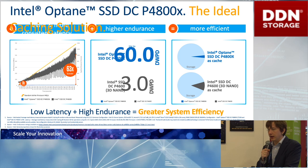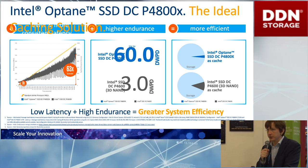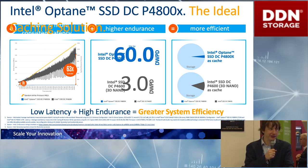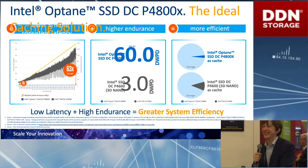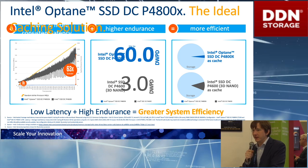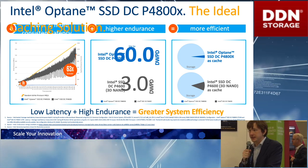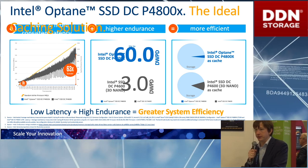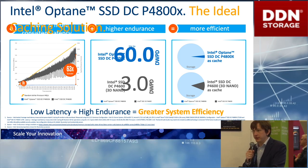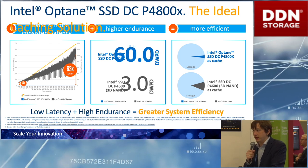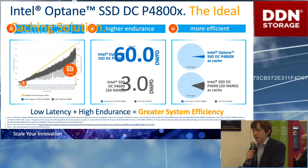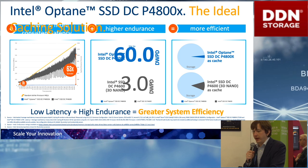What makes Optane SSDs special for metadata or caching solutions? First of all, it's low latency — significantly lower latency than NAND-based SSDs. It gives you predictability on your IO, especially very random IO, where you cannot control what happens with your storage. That's typically the case for metadata. With metadata, you don't know what happens next when a customer creates another million files, and that would be really heavy on that side. That's where you really benefit from having low-latency SSDs.